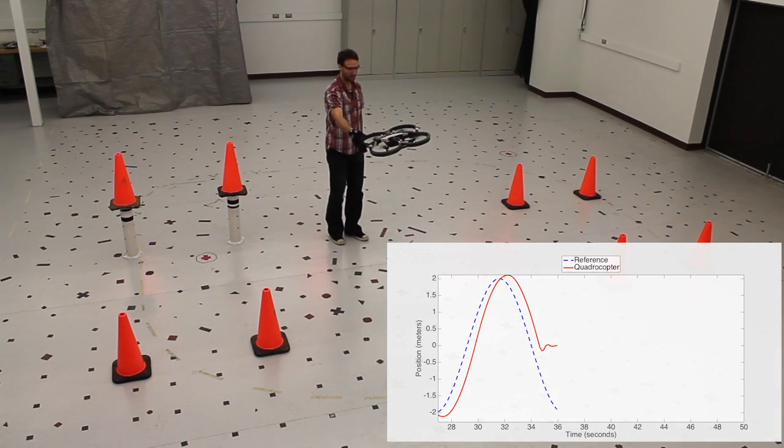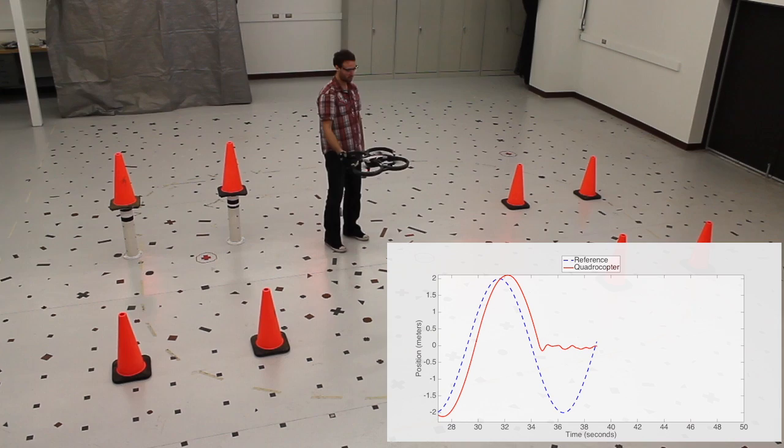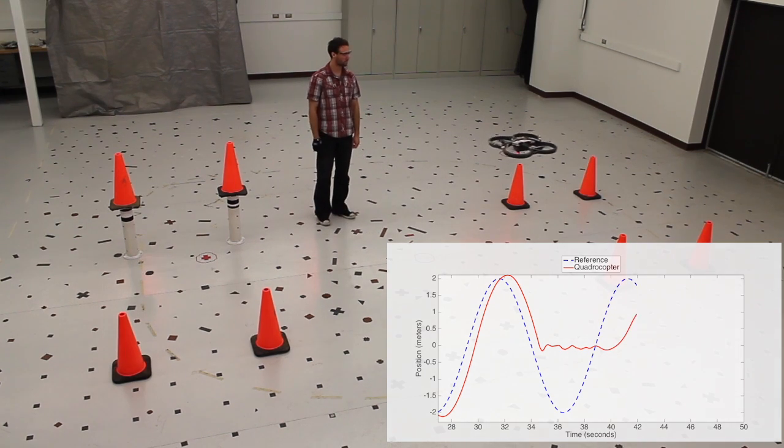During the disturbance hold, the reference continues to pass, and letting go now results in failing the desired sequence.